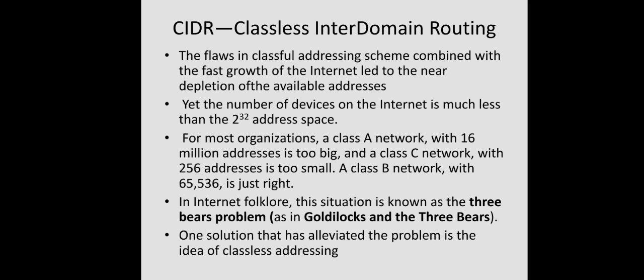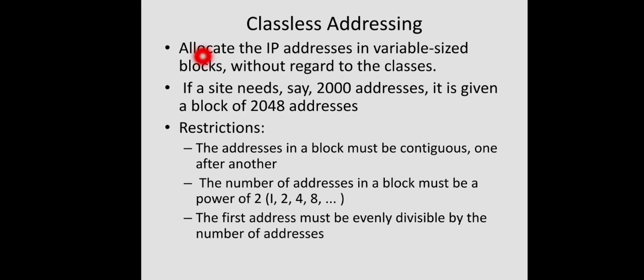The same thing happens here because of the Class B network. To solve this problem, we use classless addressing. In classless addressing, IP addresses are allocated in variable-size blocks without regard to class. Depending on the requirement of a particular organization, only that many addresses are allocated. For example, if a site needs 2000 addresses, it is given a block of 2048. Block size should always be a power of 2, and just a few restrictions exist to simplify routing.